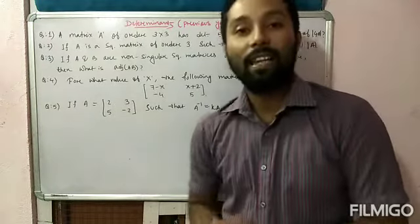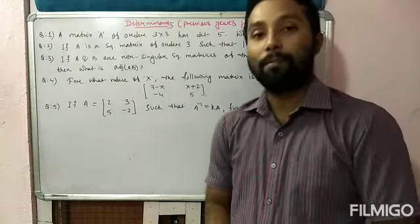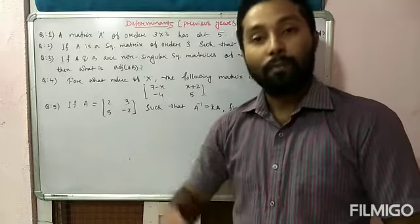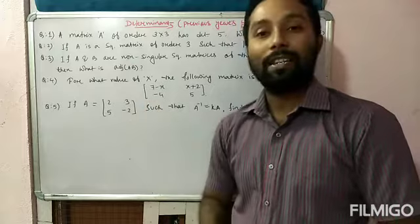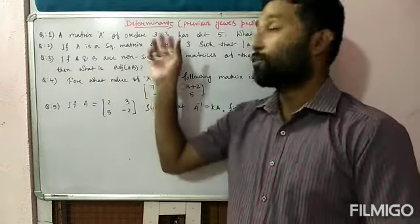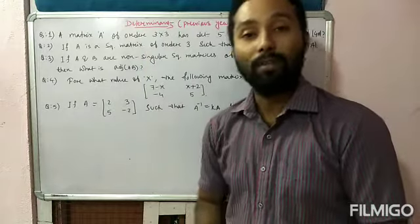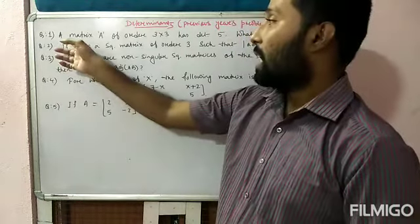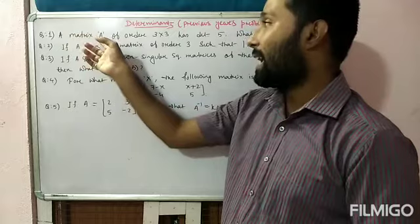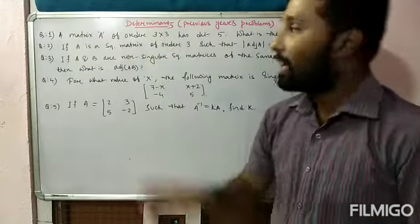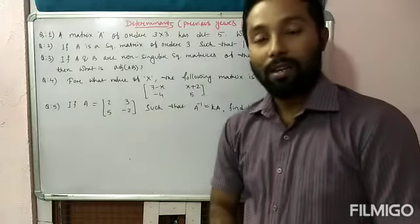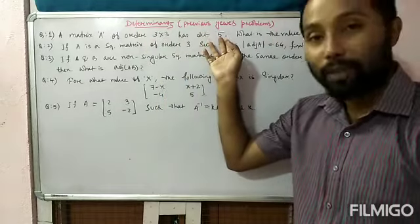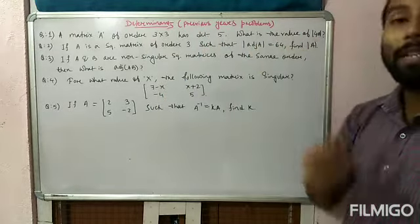Hello everyone. In this class I'm going to discuss some problems based on determinants. In the last class I discussed some previous year problems from the chapter matrices. Today I'm going to discuss similar type of questions but from the chapter determinants — all from previous year questions only. The first question: a matrix A of order 3×3 has determinant 5. Then what is the value of determinant of 4A?